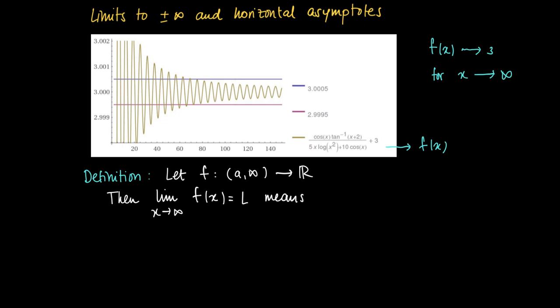when for all epsilon greater than zero, there is a number N_epsilon such that when we take x larger than N_epsilon, this means that the distance from f(x) to L is smaller than epsilon.